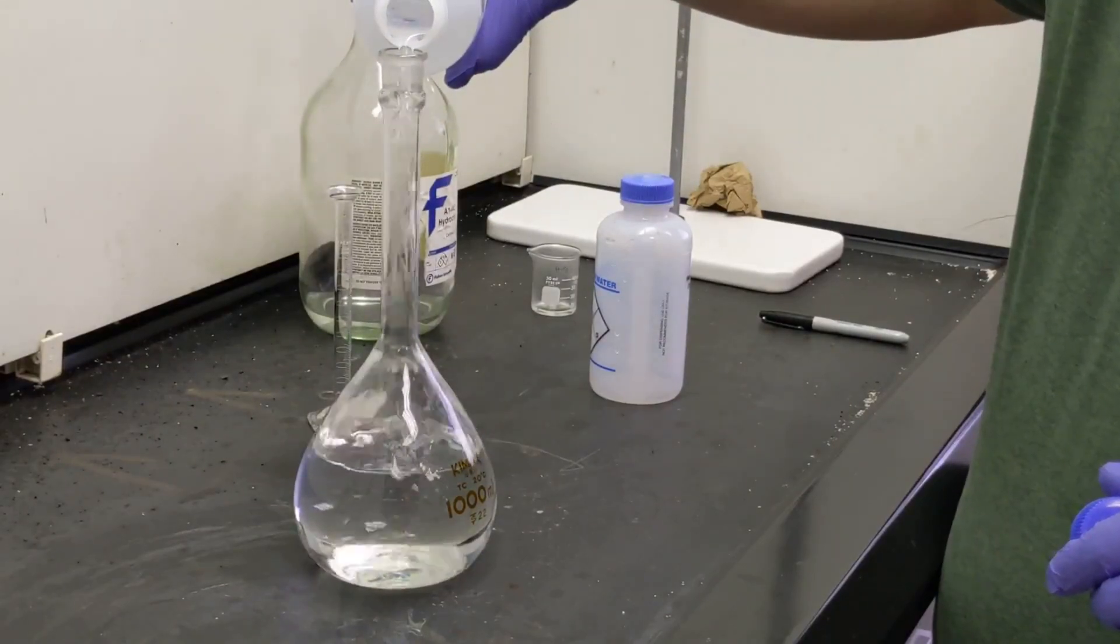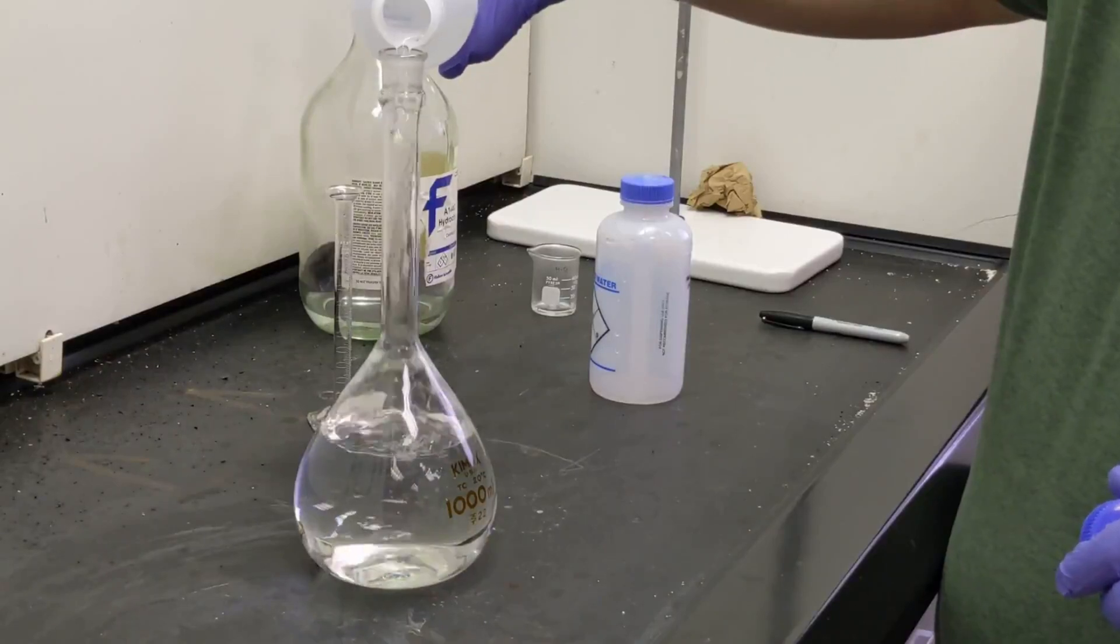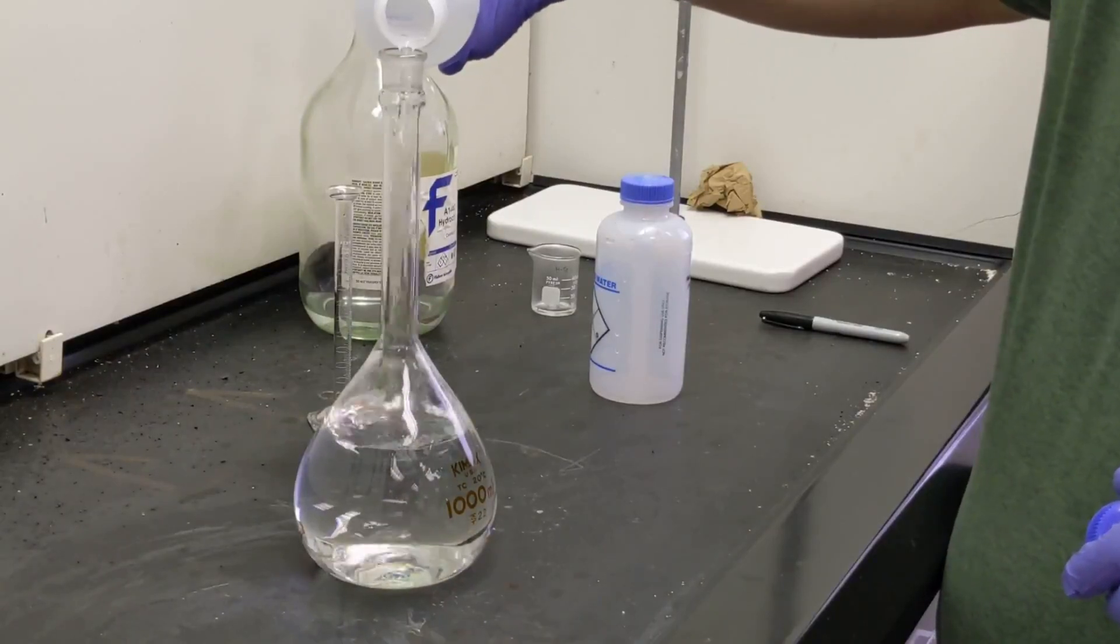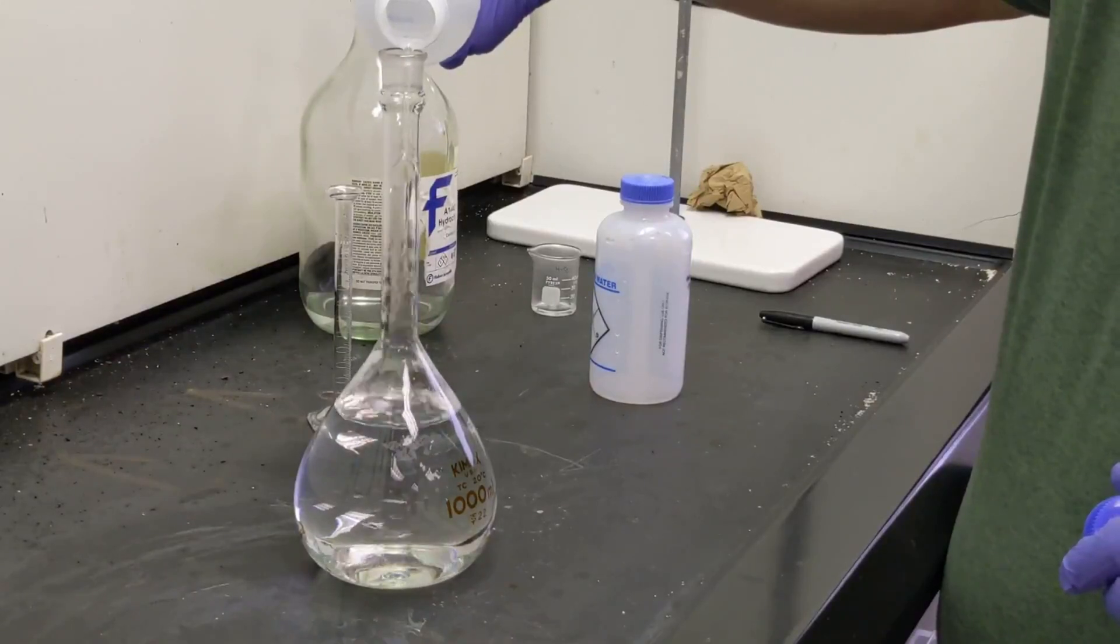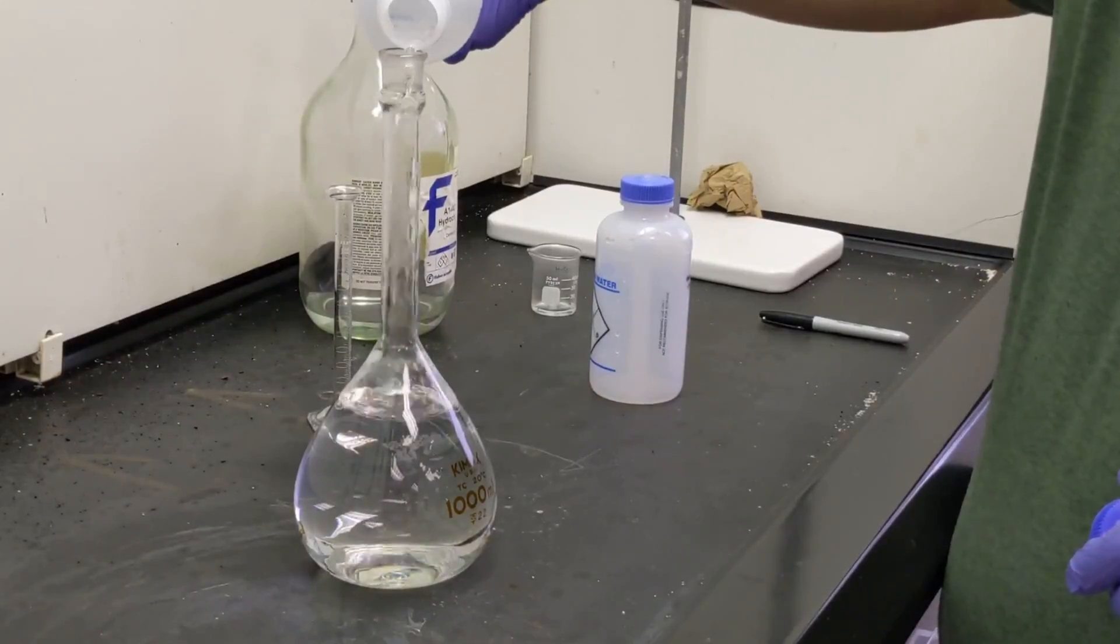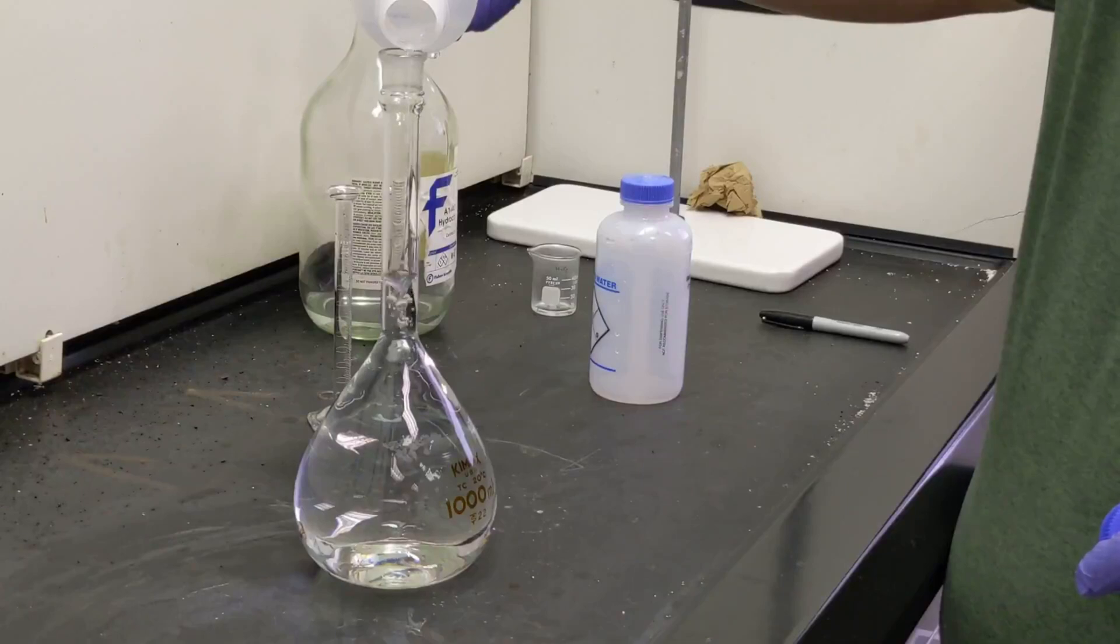As we near the mark, depending on the flask size and how much water remains, it may be advantageous to add the cap back to the wash bottle and squeeze it to add water slowly through the nozzle, as opposed to pouring it in from the lid like we're doing here.